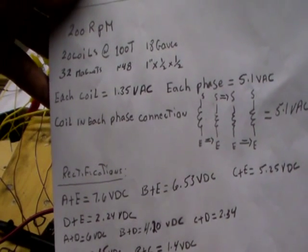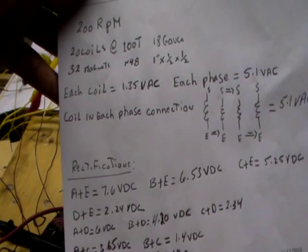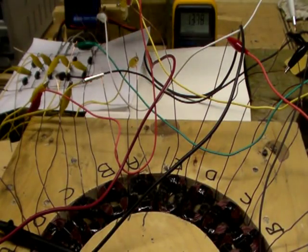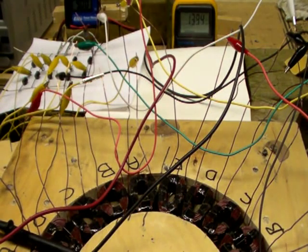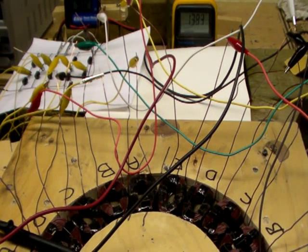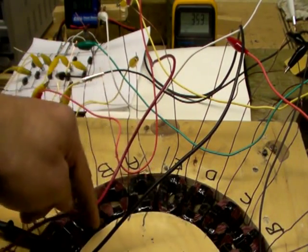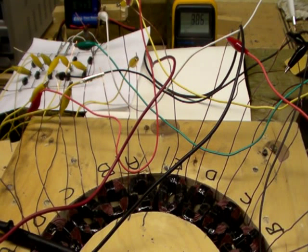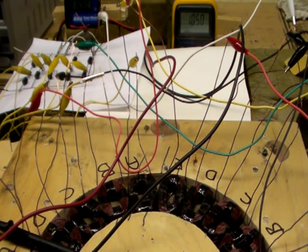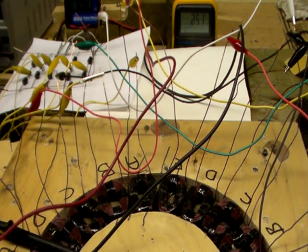Each coil is giving me right now 1.35 AC. If you look down there, that's the AC for each coil. Some of them will give me a little bit more because obviously it's a little bit lousy setup. It's not in resin so it's going to move around, but an average of 1.35 AC.